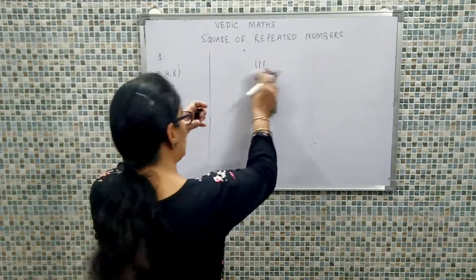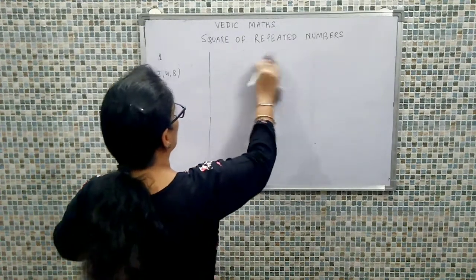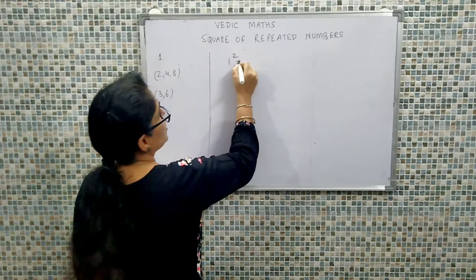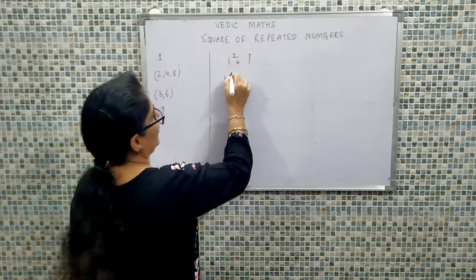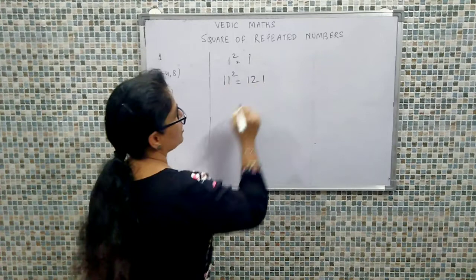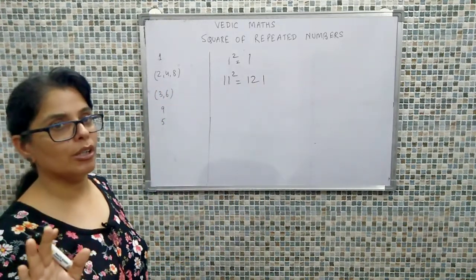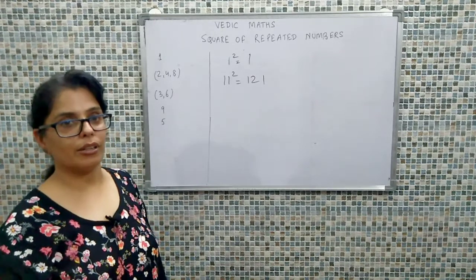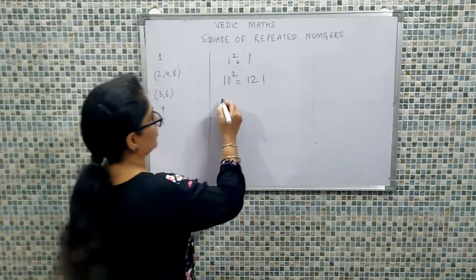So let's start with 1. Now 1 ka square kya hota hai? That is 1. 11 ka square kya hota hai? That is 121. We all remember it — we have memorized it by calculating it repeatedly.